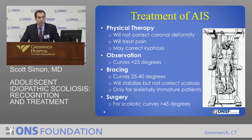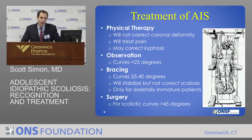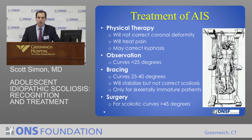Scoliosis treatments have been tried for a very long time — since Greek times. The options consist of physical therapy, observation, bracing, and surgery. Unfortunately, physical therapy, exercise, and chiropractic care have not been shown in studies to be beneficial in terms of halting or correcting the curve. There are prospective multicenter trials ongoing, but so far no good correlation has been found between physical therapy, chiropractic manipulation, or electrical stimulation and stopping curve progression.